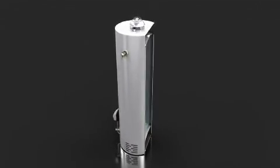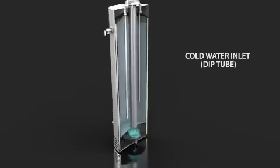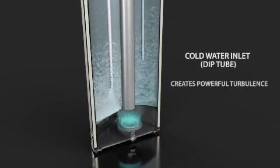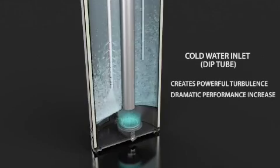The HydroJet changes the way water enters your water heater tank. It is a radically different, highly modified cold water inlet or dip tube. Instead of water entering the tank in a smooth, undisturbed manner, the HydroJet gives the water powerful turbulence and force. The effect on the water heater's overall performance is dramatic.